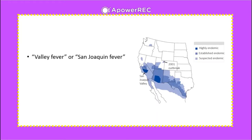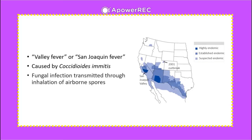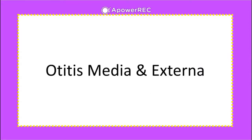Our first term is coccidioidomycosis, also known as valley fever or San Joaquin fever. It is fungal in origin and is transmitted through inhalation of airborne spores. This image here is an example of a 2001 outbreak caused by inhalation of spores from a dinosaur dig.